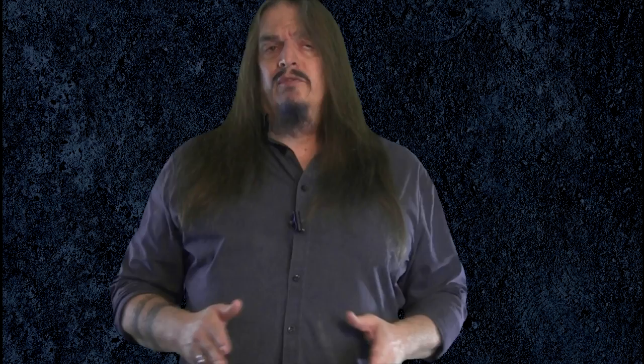That's a problem for creationists, because they typically insist that all the potential variety for every possible daughter group must already exist in the ancestral genome. But it's not there. Only the basis of it is.